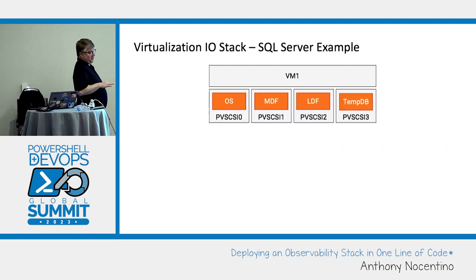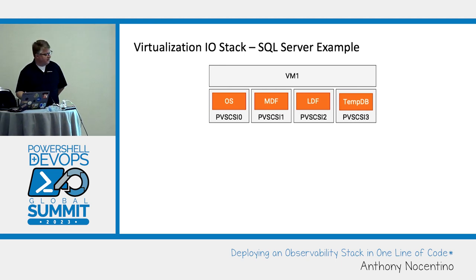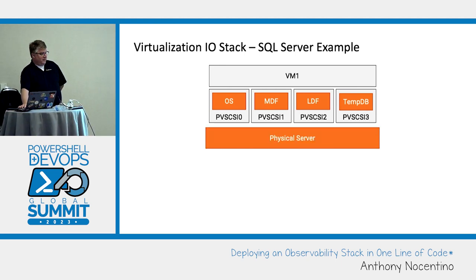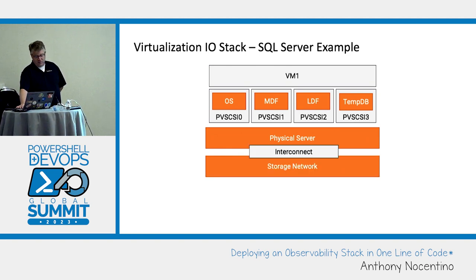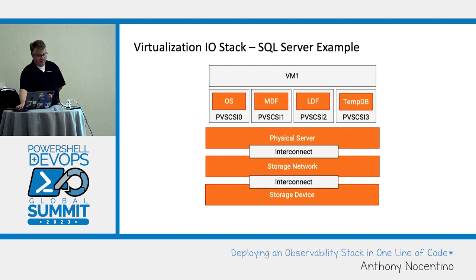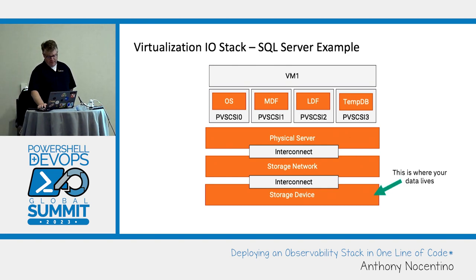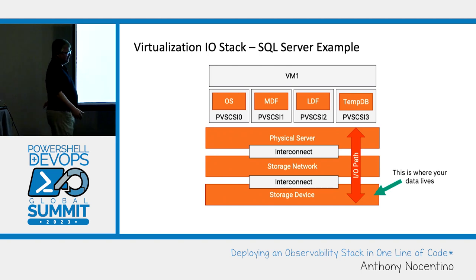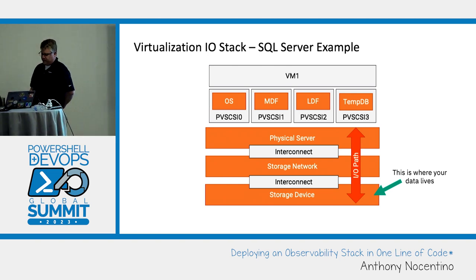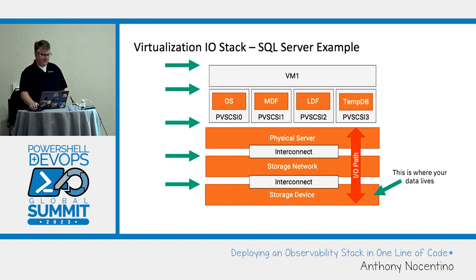We're going to talk about VMware specifically as a use case. If I have a virtual machine, it's going to sit on a physical server, connected to some sort of storage network — shared storage — and then eventually connect to a storage device. So look at all the things I have to monitor in this stack. SQL Server has DMVs, Windows has Performance Monitor, vSphere has its own metrics, my networking team has metrics inside the Fibre Channel or Ethernet network, and there might be vendor-specific tools on top of that.